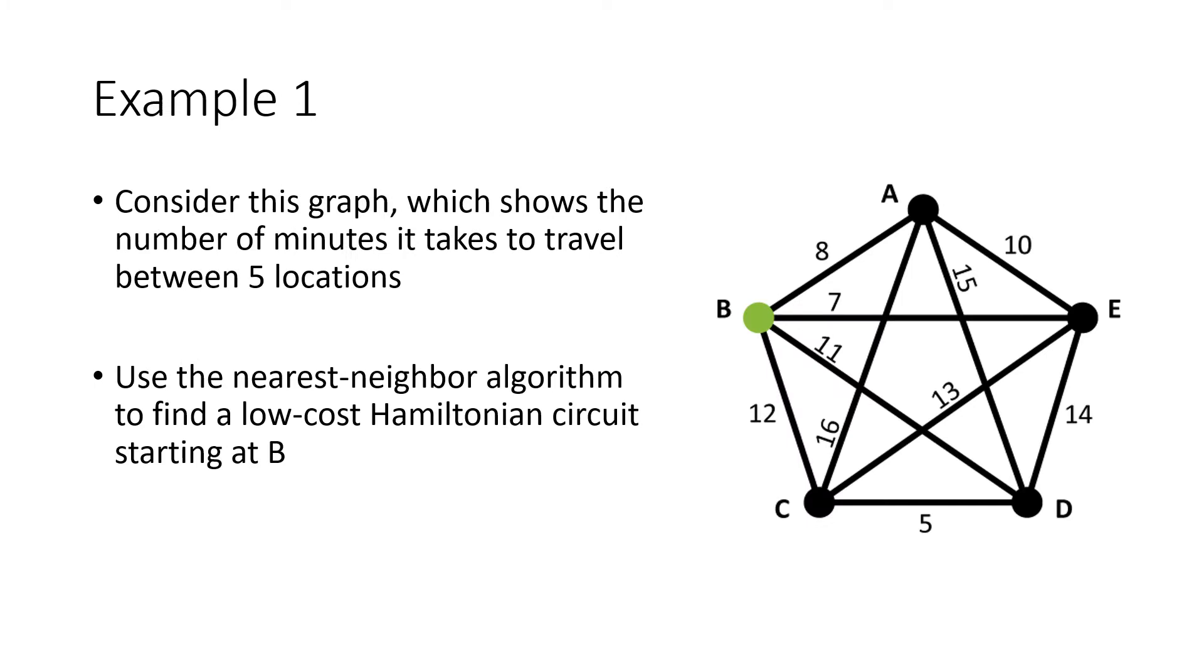So here's an example. We've got a graph which shows the time that it takes in minutes to travel between five different locations. And we want to use the nearest neighbor algorithm to find a low-cost Hamiltonian circuit that starts at vertex B. So here's how this is going to work.